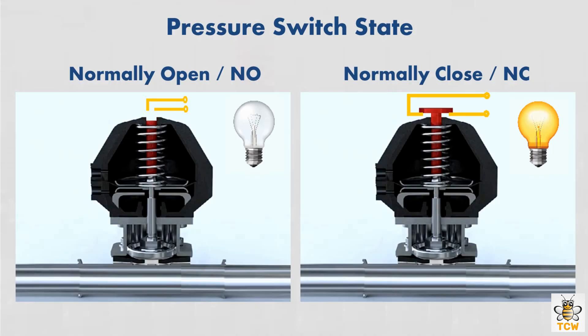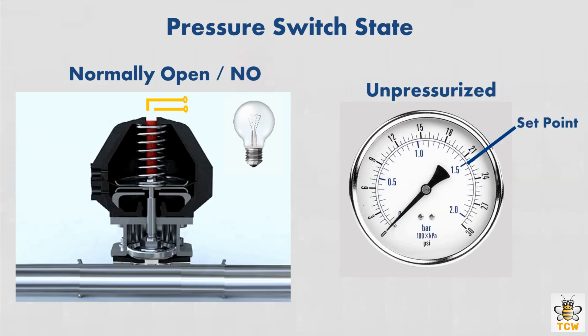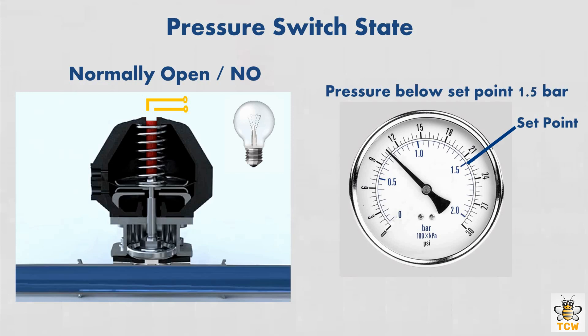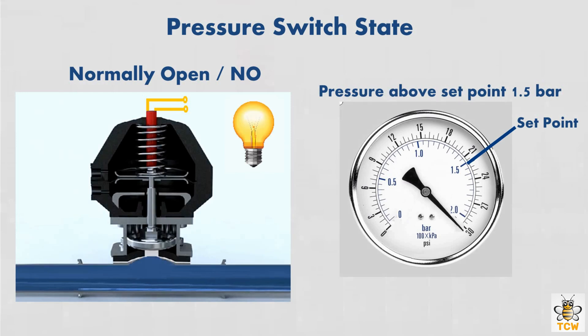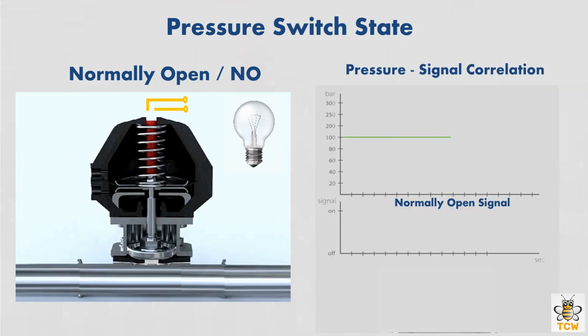Apart from the three main specifications — operating voltage, operating current, and pressure set point — the pressure switch state is another factor that needs to be determined. There are two types of pressure switch states. The first is normally open, or NO. Normally open is the state where the pressure switch is disconnected when unpressurized. It remains disconnected if given a pressure lower than the set point, and only connects when the pressure reaches or exceeds the set point of 100 bar.